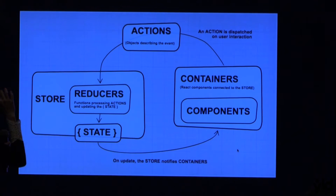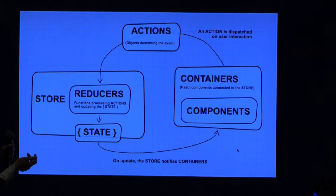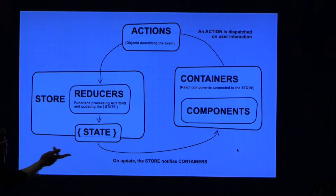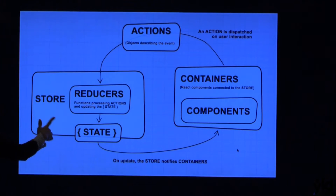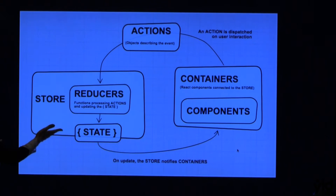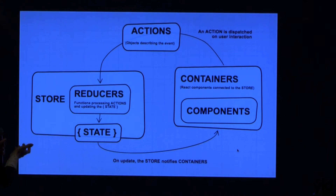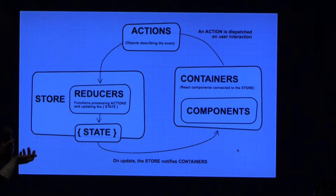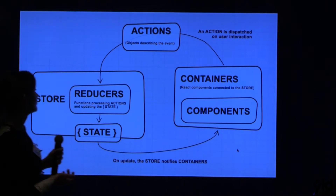Whenever there is a user interaction, the containers will dispatch an action, and the actions will traverse through to the store, where they are processed by reducers — functions that will update the state based on the action that describes what had happened.